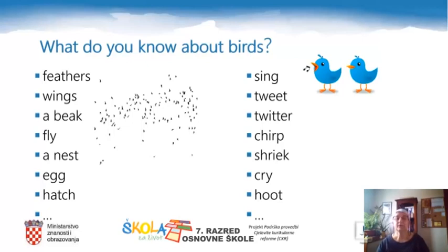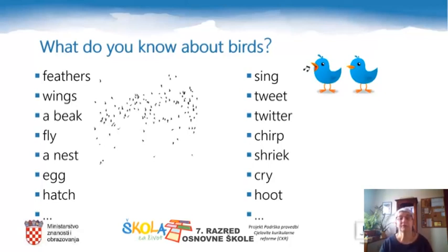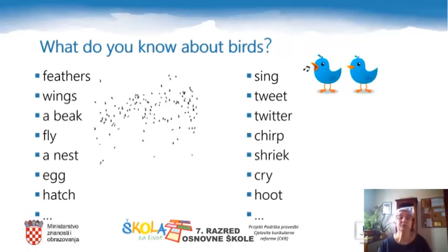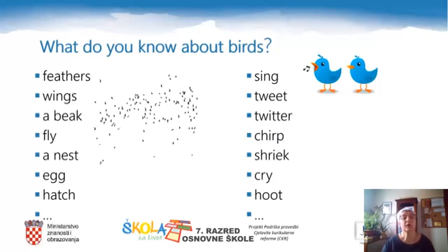We'll next focus on the verbs that describe the sounds that birds produce. We usually say that birds sing, but there are many verbs: they tweet, they twitter, they chirp, they shriek, they cry, they hoot — not all birds, but some. If you're working on this lesson at your computer, please pause this video, copy these words, and see if you can add to the list of verbs describing what birds do and what birds look like.